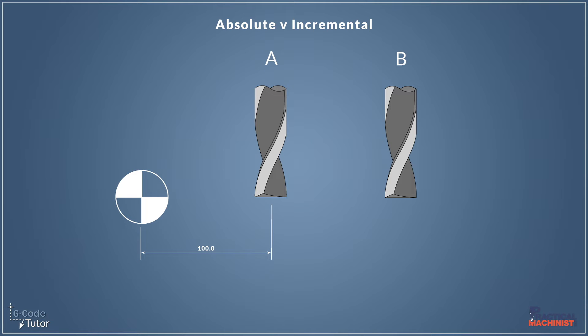So now our cutter is at position A. So to move to position B we would need to give a dimension from the datum position to position B if we're in absolute mode.